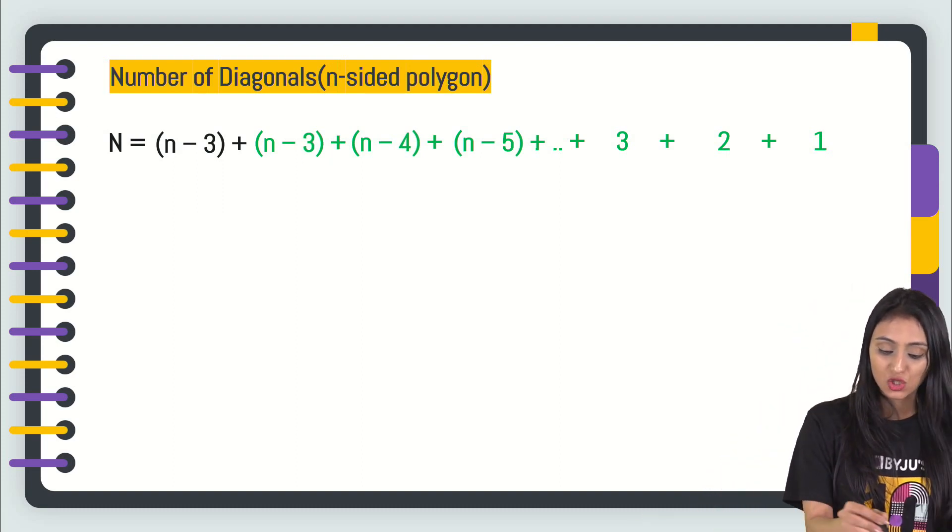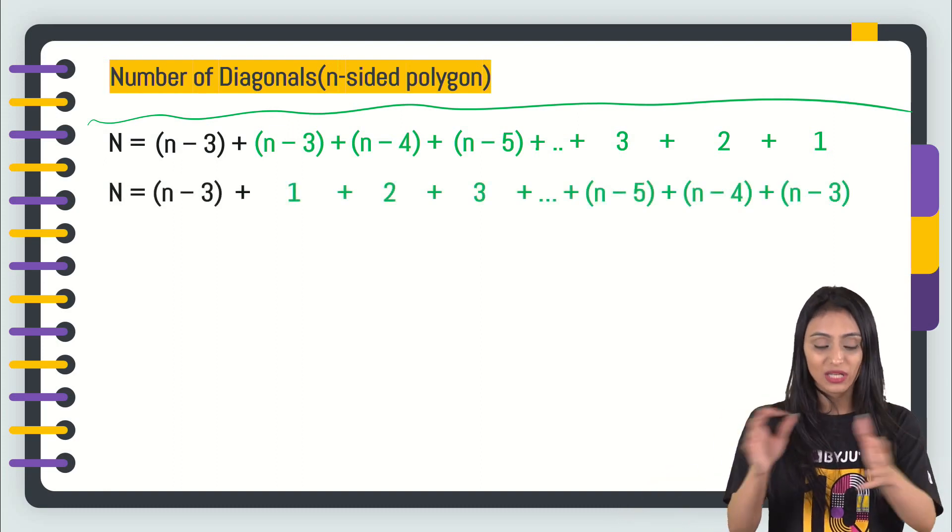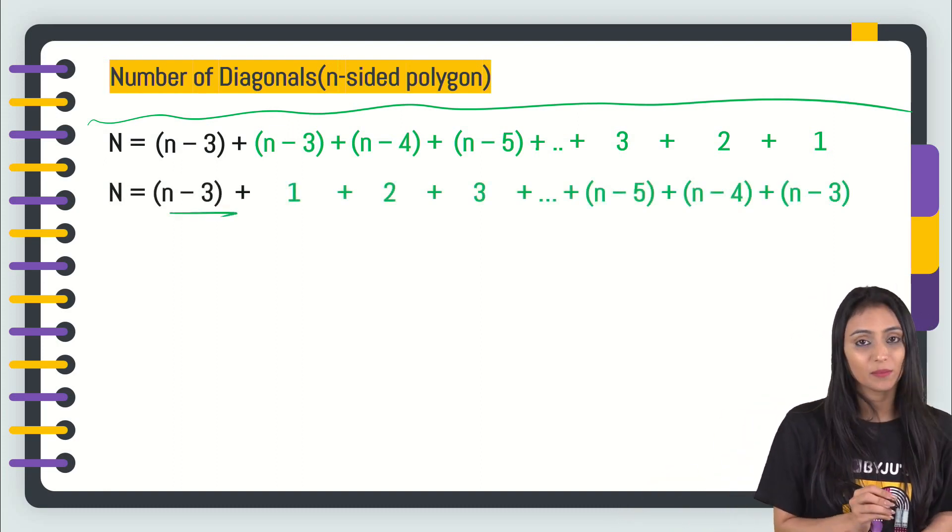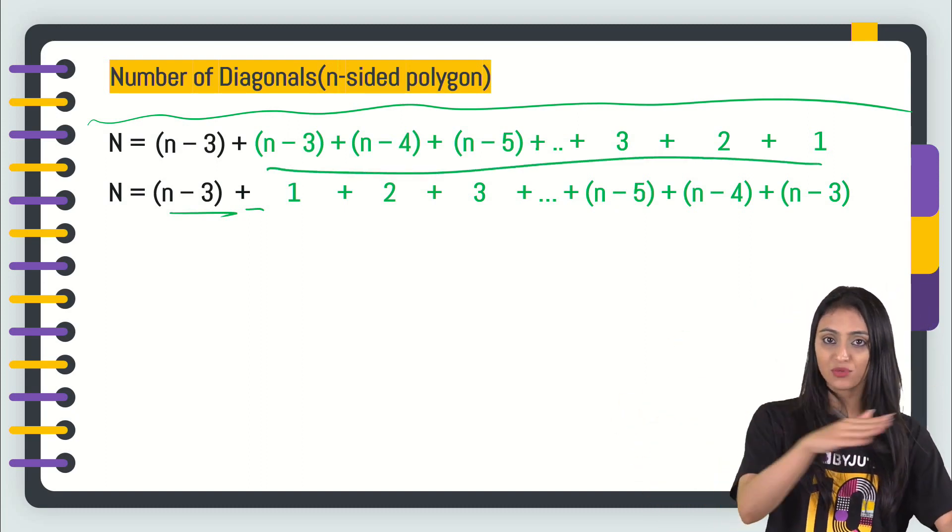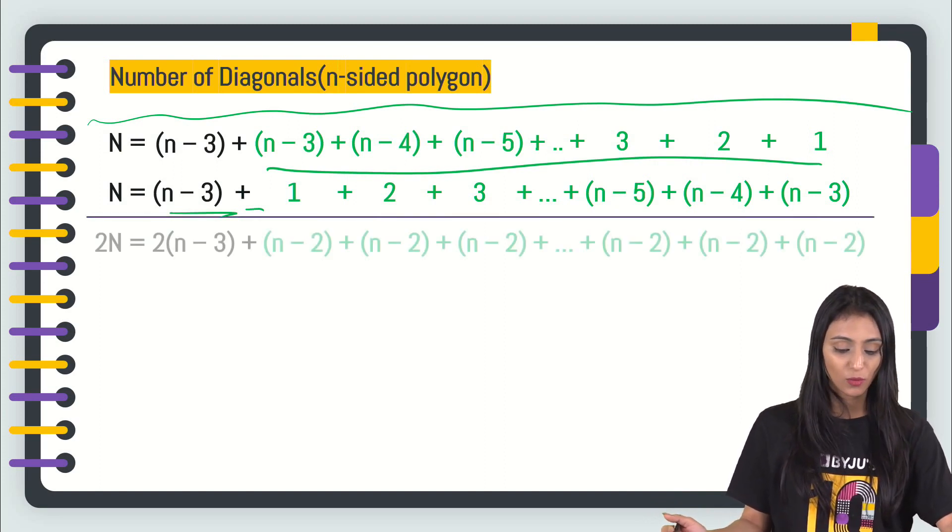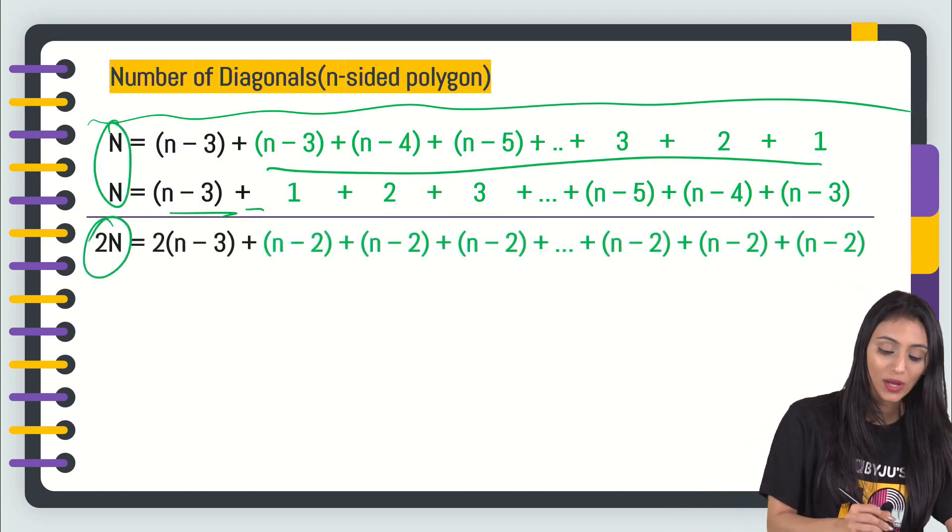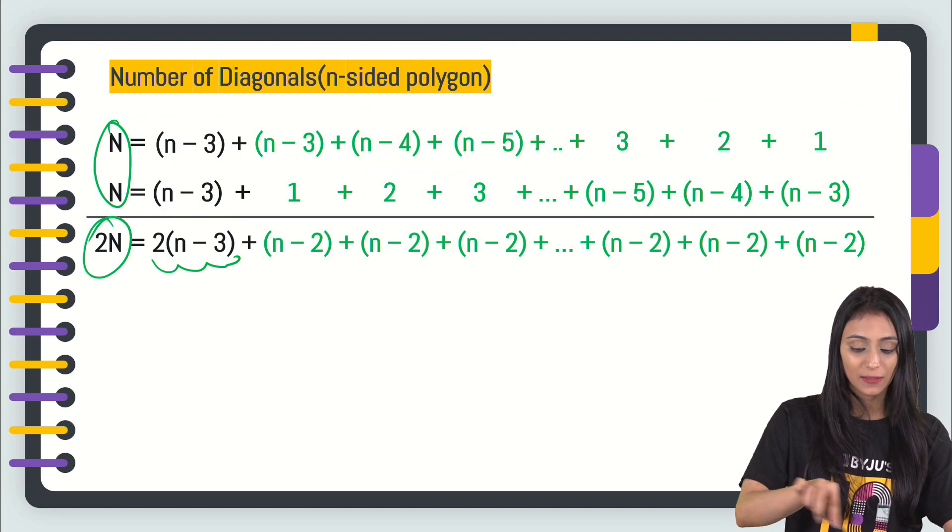Now, using this, we will be counting the number of diagonals for an n-sided polygon. So this is the actual expression that we got in the previous slide. Now, I'm just reshuffling this. So this n-3 remains as it is, plus, and I'm writing this in the order, starting from 1 to n-3. I'm just reversing the order. So if I add these two up, these two equations up, what I'm going to get? n plus n is going to be 2n. We are basically deriving it.